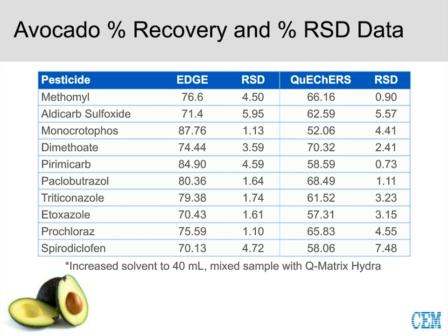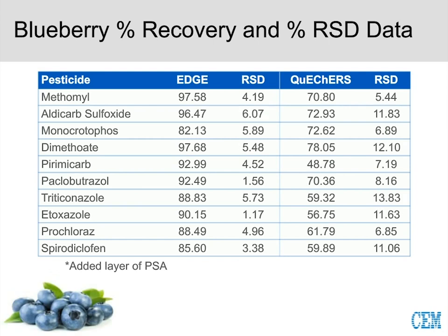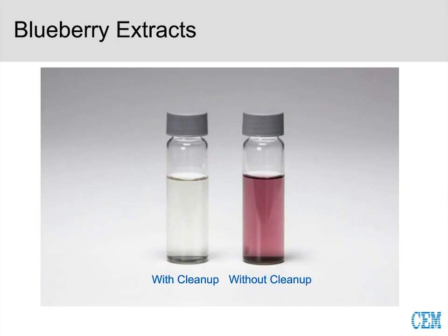Moving to blueberries — when running blueberries we found some need for cleanup due to very high pigmentation. By adding just a layer of PSA, we achieved improved results. We are getting better results for blueberries on the EDGE than with our QuEChERS results. And for cleanup being the answer, a picture speaks loudly: adding just a little bit of PSA makes a dramatic difference. The extract with PSA cleanup on the left versus without cleanup on the right — the difference is very clear. That small amount of cleanup went a long way toward optimal results for blueberry extract.